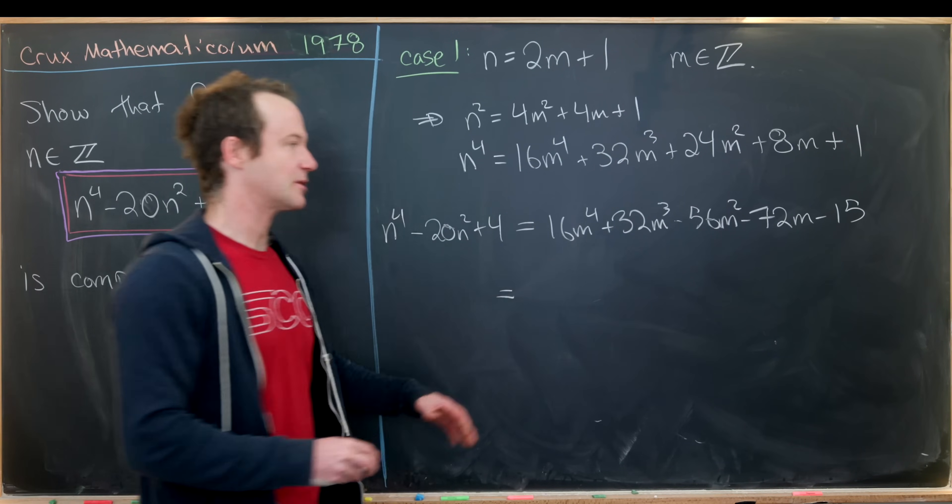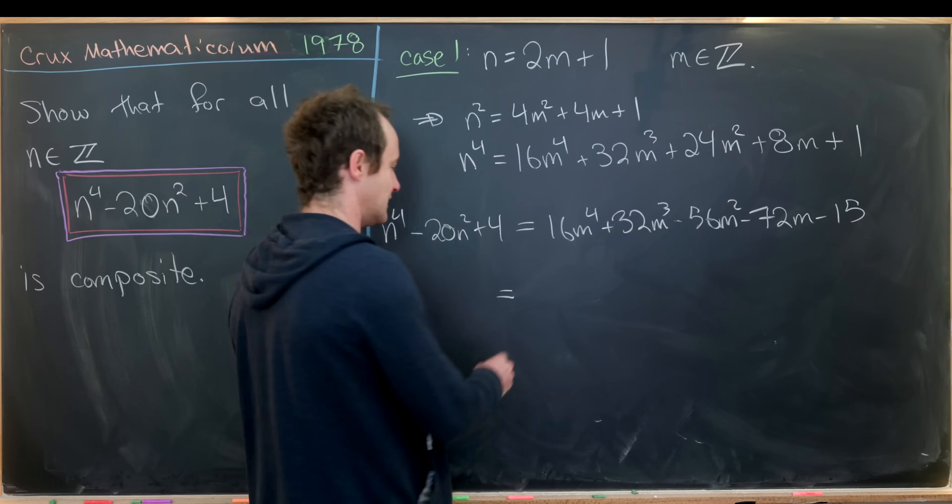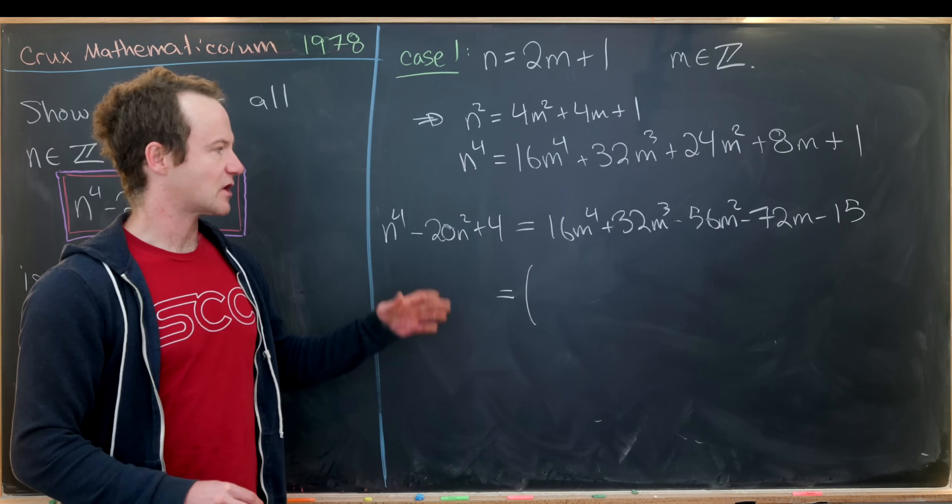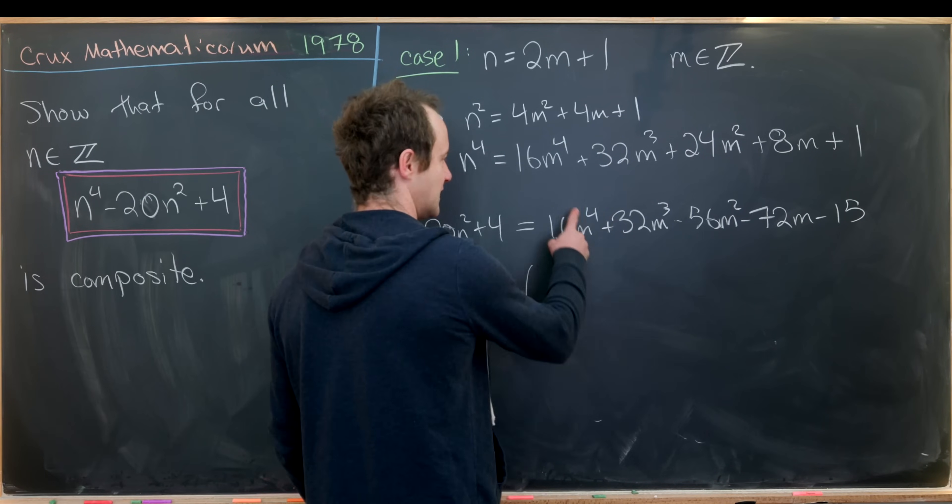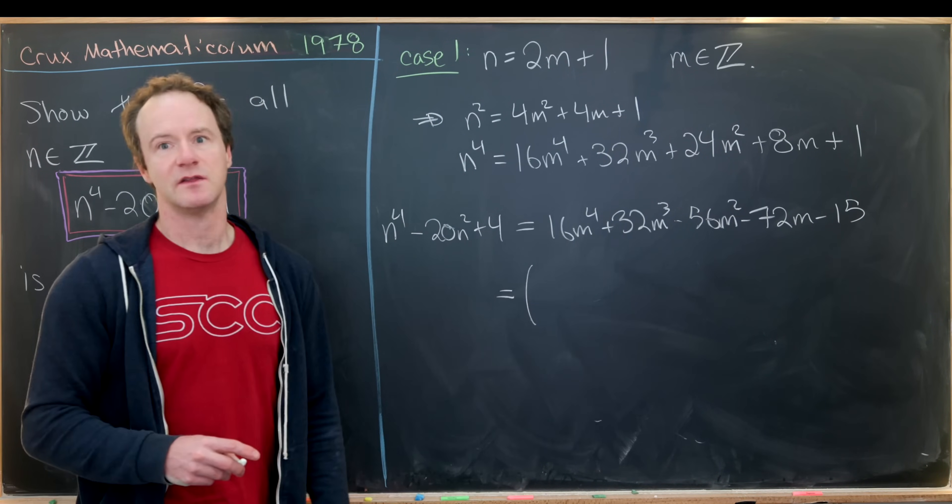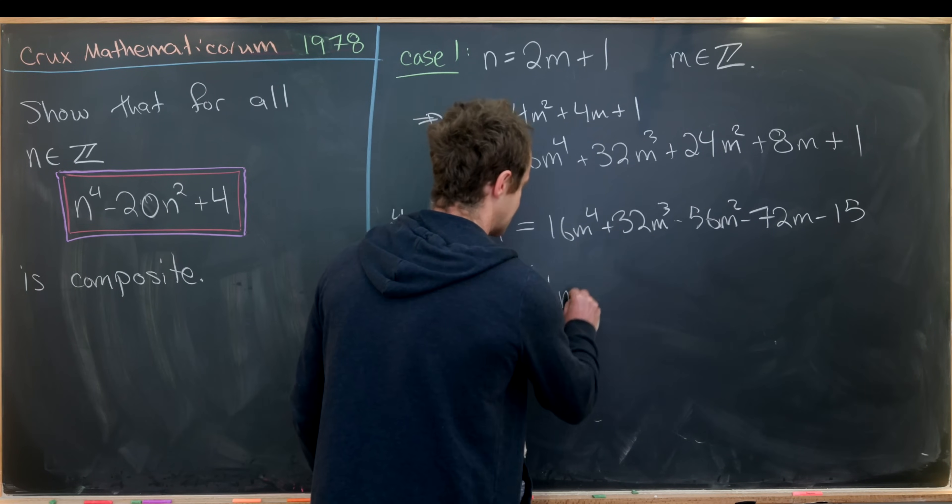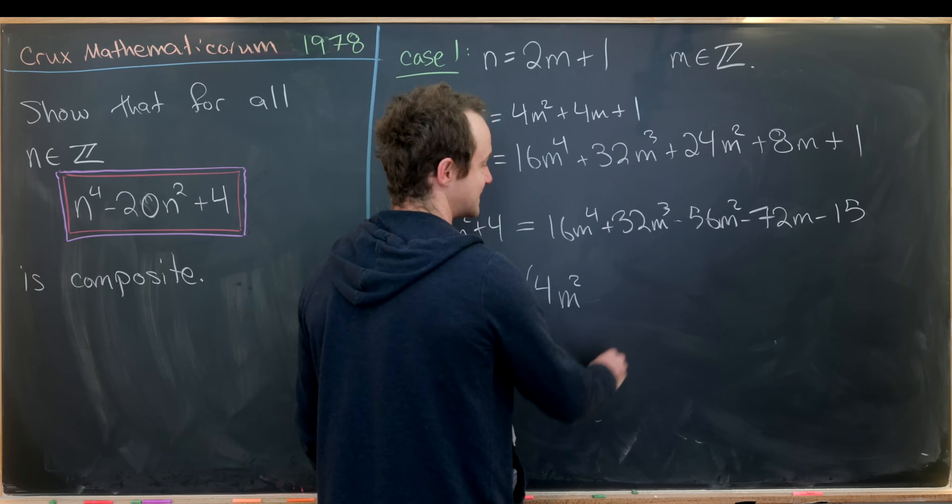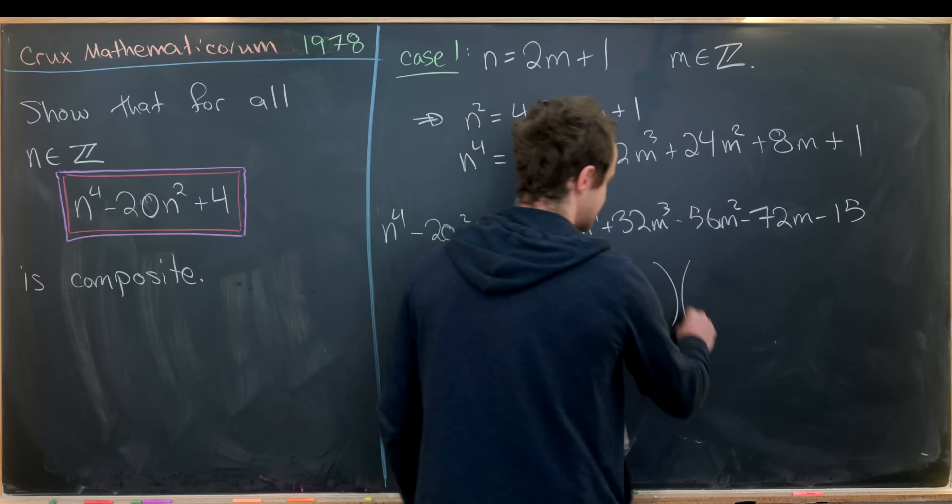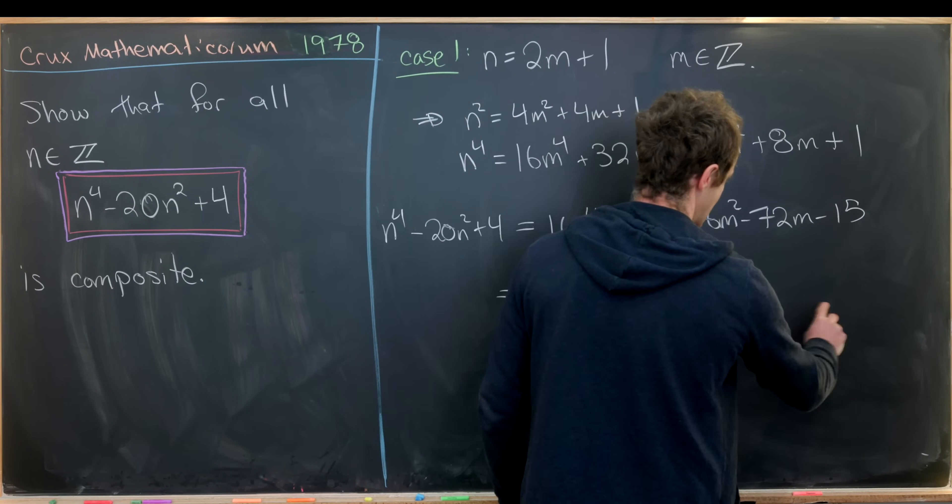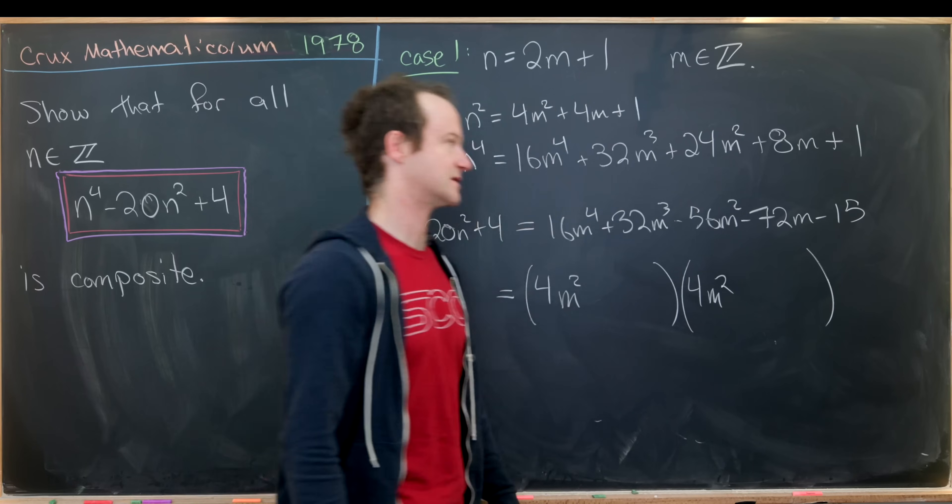You can start by guessing the factorization and then filling in the details. If I were to start guessing, I would think 16 here, that's just 4 squared. So probably this factors as 4m squared, some center term, and then some constant term, times another 4m squared, some center term, and some constant term.